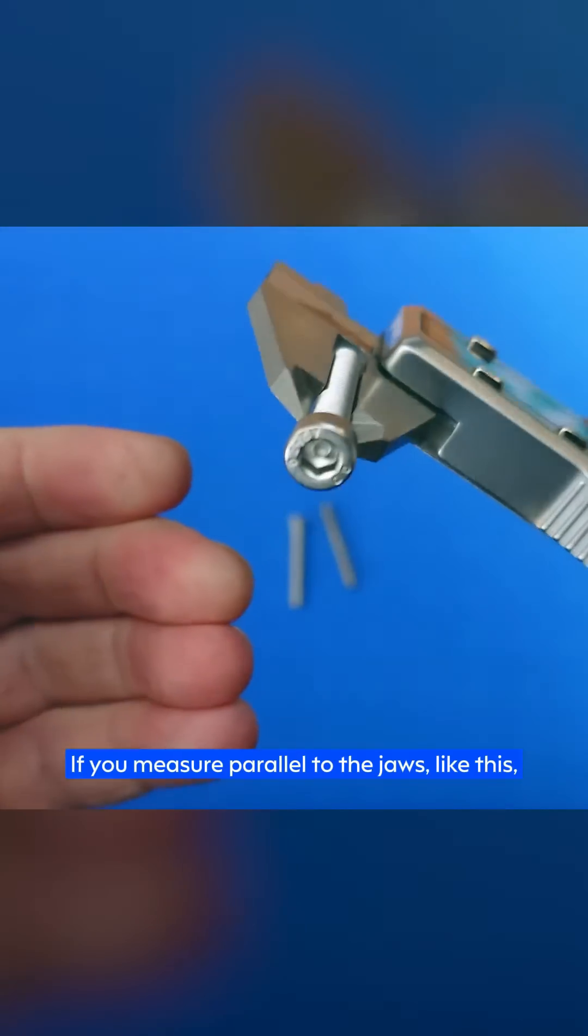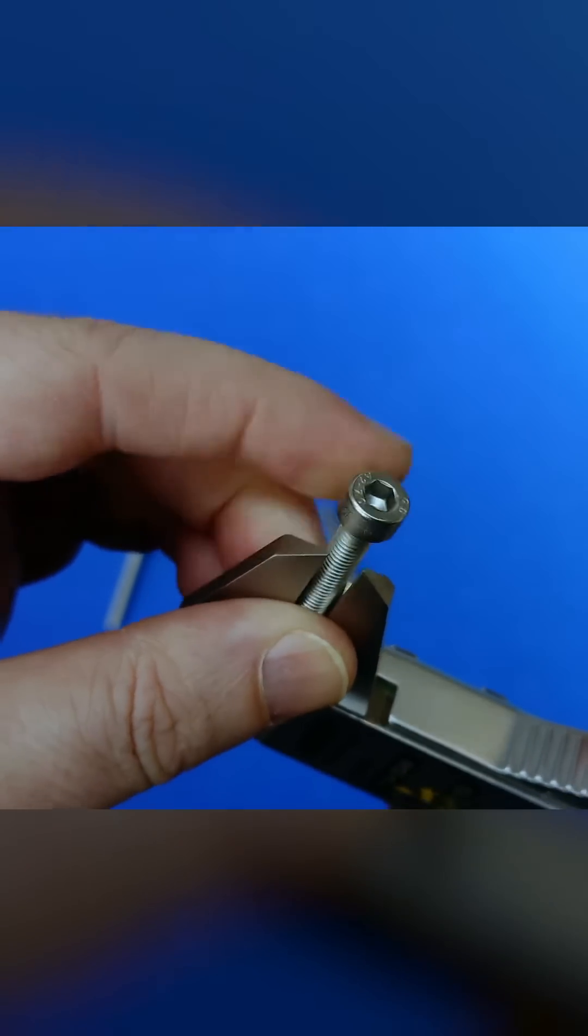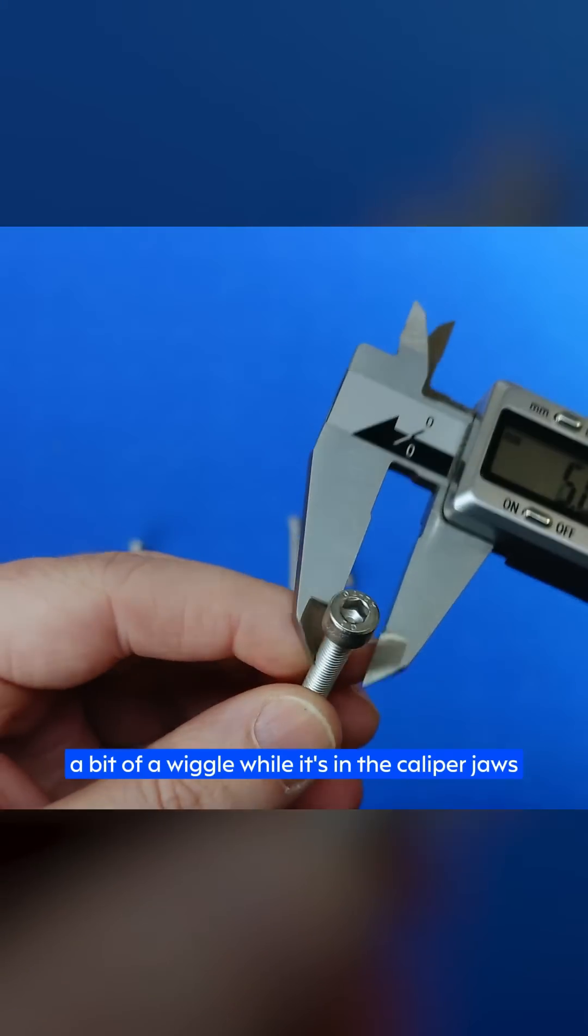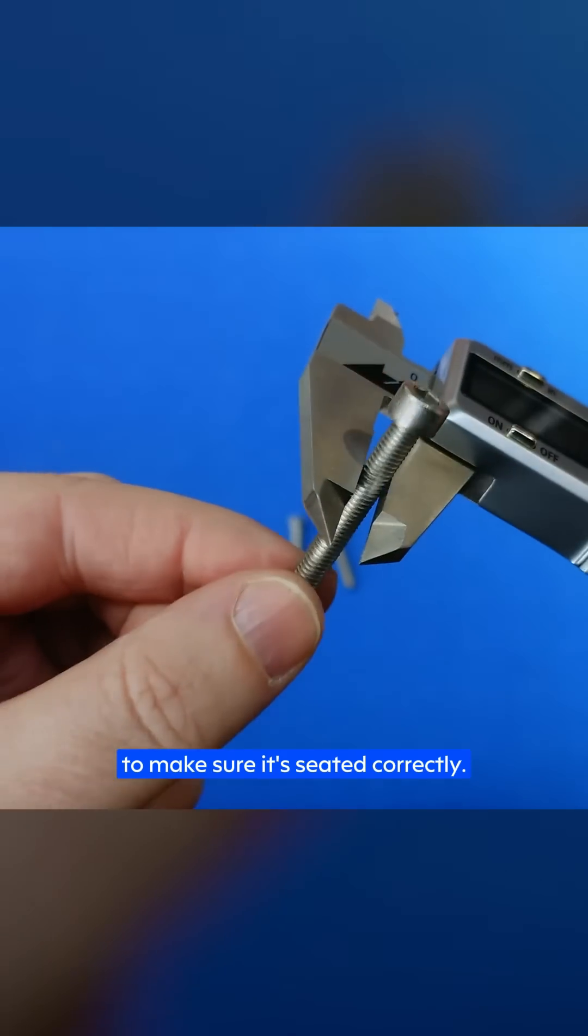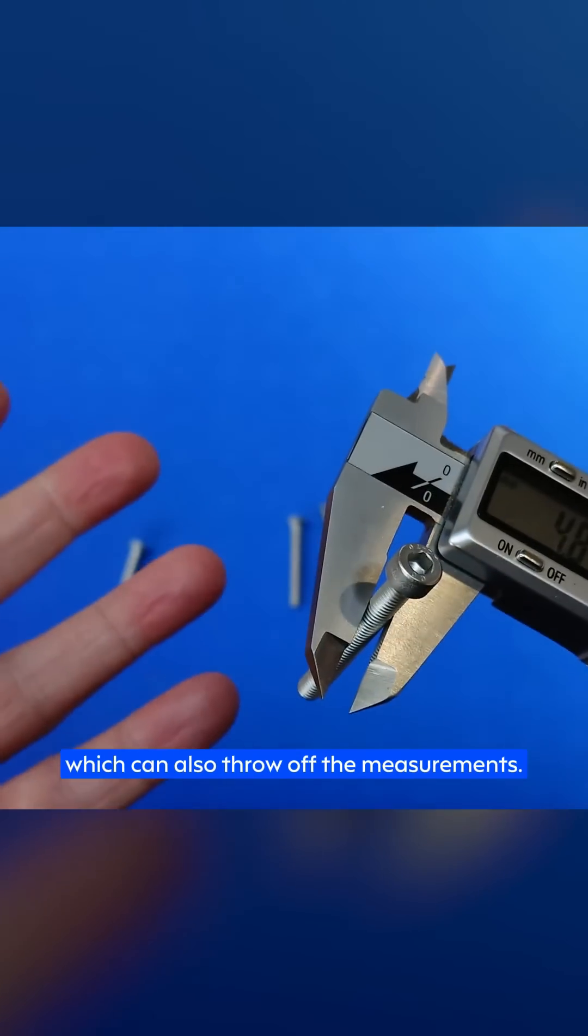If you measure parallel to the jaws like this, there's a good chance that you're not going to be square up and then your measurements could be wrong. Another good tip here is to give the screw a bit of a wiggle while it's in the caliper jaws, just to make sure that it's seated correctly. This also helps make sure that you're not measuring in between the threads, which can also throw off your measurements.